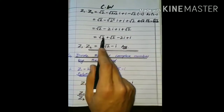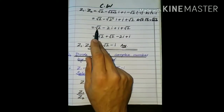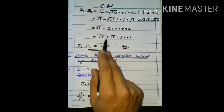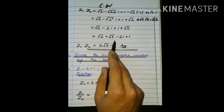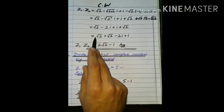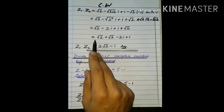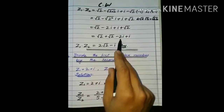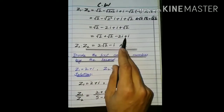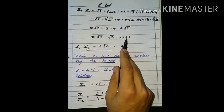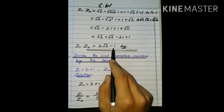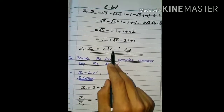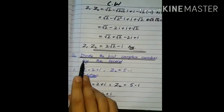arrangement کرتے ہیں: real real کے ساتھ، imaginary part imaginary کے ساتھ۔ 1 coefficient ہے یہاں پر بھی 1 ہے تو دونوں کو add کریں گے تو 2 under root 2 آجائے گا۔ اور imaginary part میں: minus plus minus تو minus کریں گے — 2 سے 1 چلا جائے گا، 1 ہم لکھتے نہیں صرف آجائے گا، اور minus iota آجائے گا۔